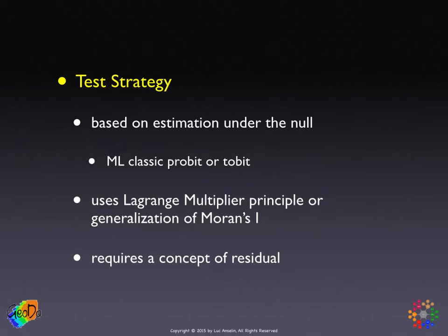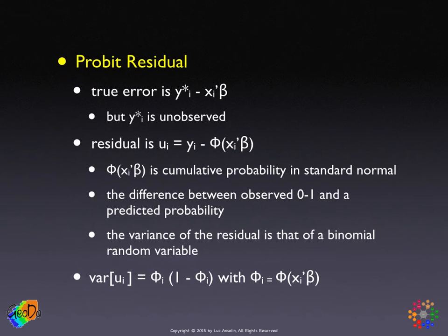In order to do that, we need the counterpart of a concept of a residual. The problem is the true error term is the difference between the unobserved latent dependent variable y-sub-i-star and the predicted value x-sub-i beta. But we don't have that. What we have instead is the difference between a 1 or a 0 and the probability we get from the cumulative standard normal, and that is what is operational.